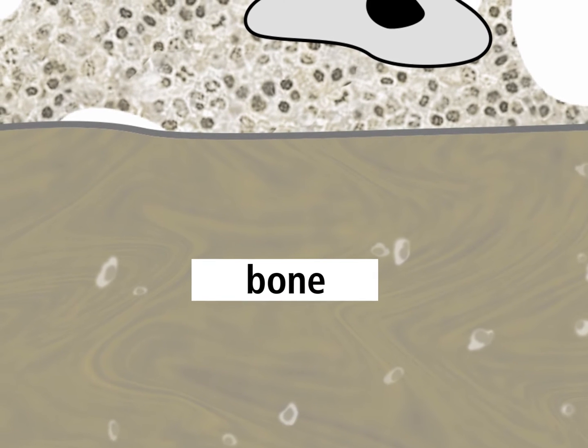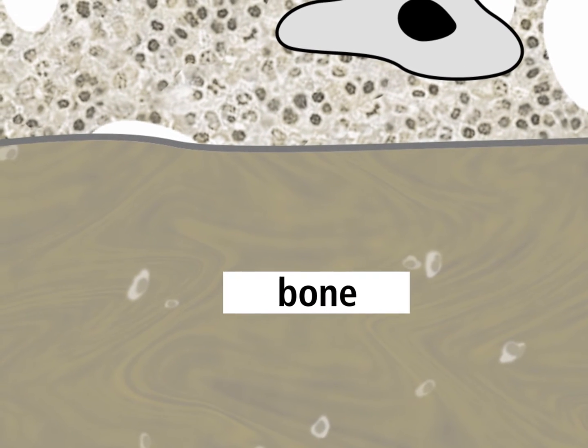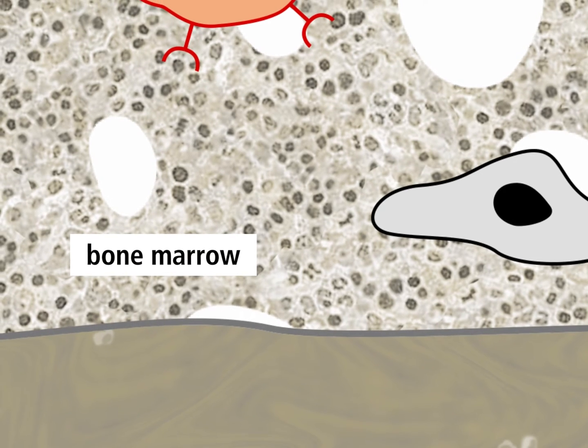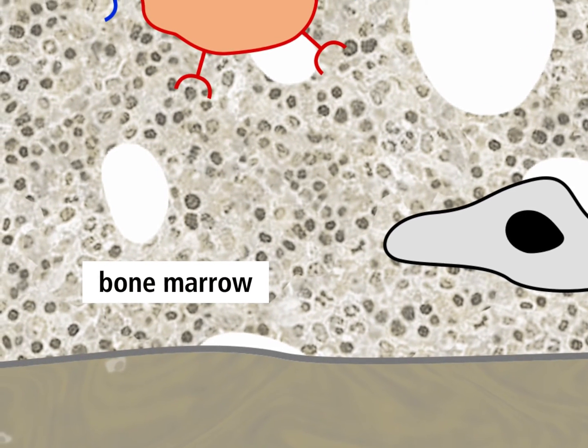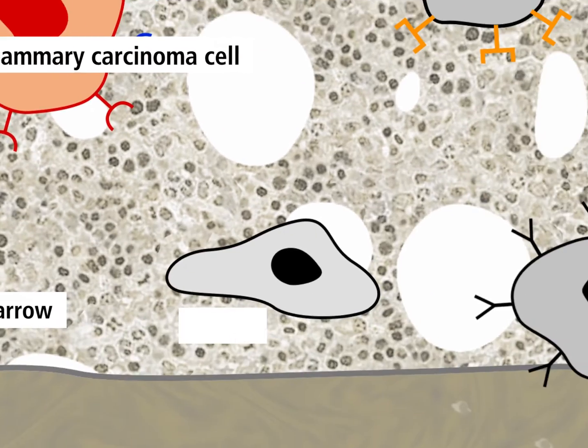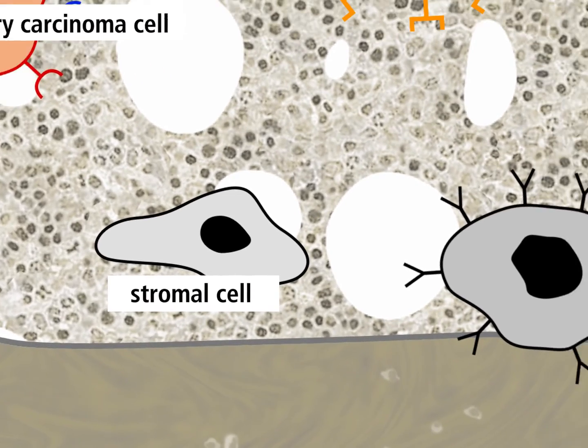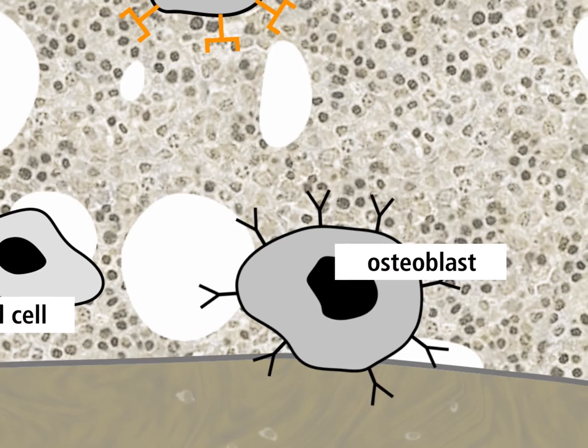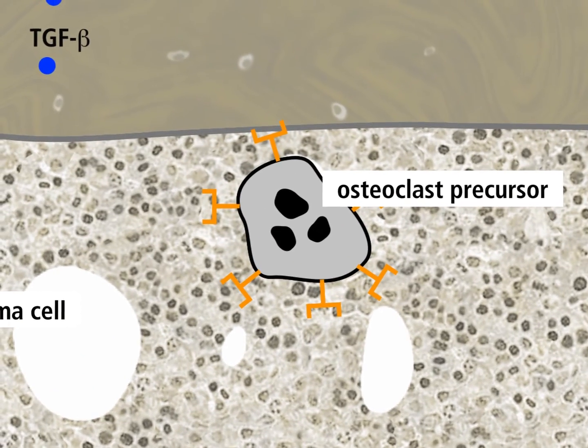The bone matrix confines the bone marrow, which contains different cell types involved in the formation of osteoclastic metastases: the mammary carcinoma cell, the stromal cell, the osteoblast, and the precursor of osteoclasts.